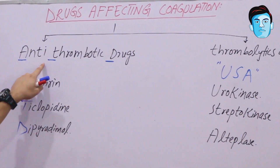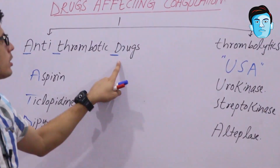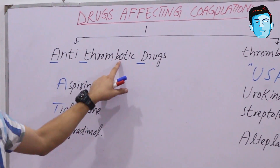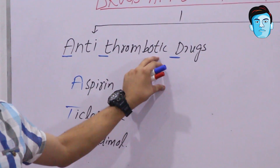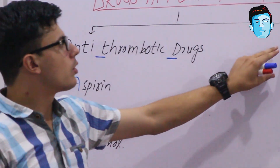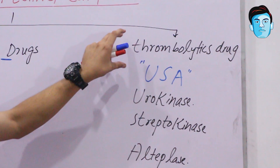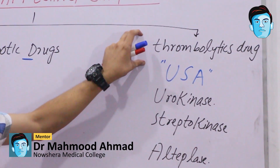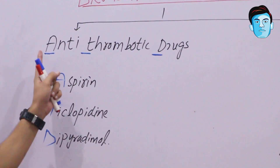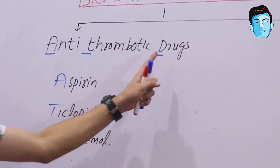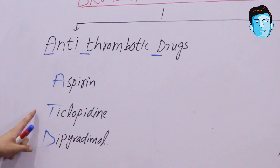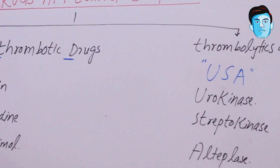To summarize, drugs affecting coagulation are broadly categorized into two varieties: antithrombotic drugs and thrombolytic drugs. Antithrombotic drugs suppress platelet aggregation and prevent thrombus formation. Thrombolytic drugs dissolve the already formed thrombus. The antithrombotic drugs are recalled using ATD: A for aspirin, T for ticlopidine, D for dipyridamole.